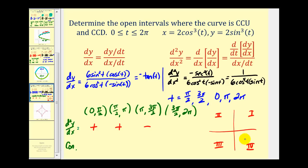And then in the fourth quadrant, sine is negative and cosine is positive. So this will be positive, this will be negative. Resulting in a negative fraction.